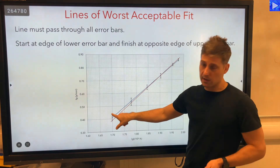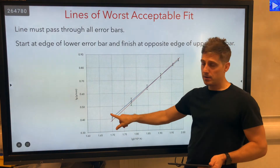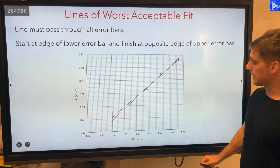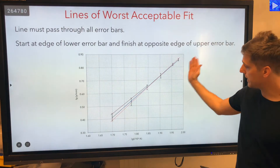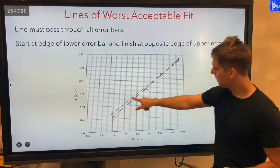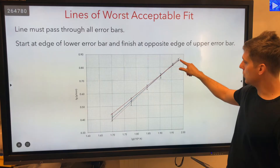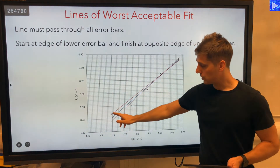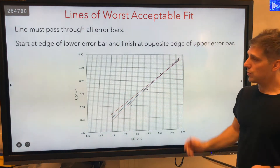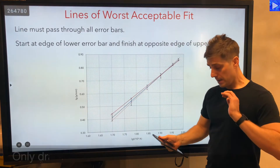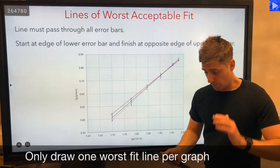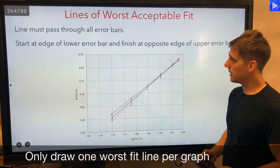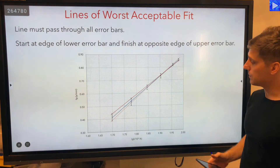You could also start at the top extreme of the lower error bar and go to the bottom extreme of the upper one — that's the other option. It passes through all of the error bars, just going from one extreme to the opposite extreme. So those are your options for drawing a line of worst acceptable fit.